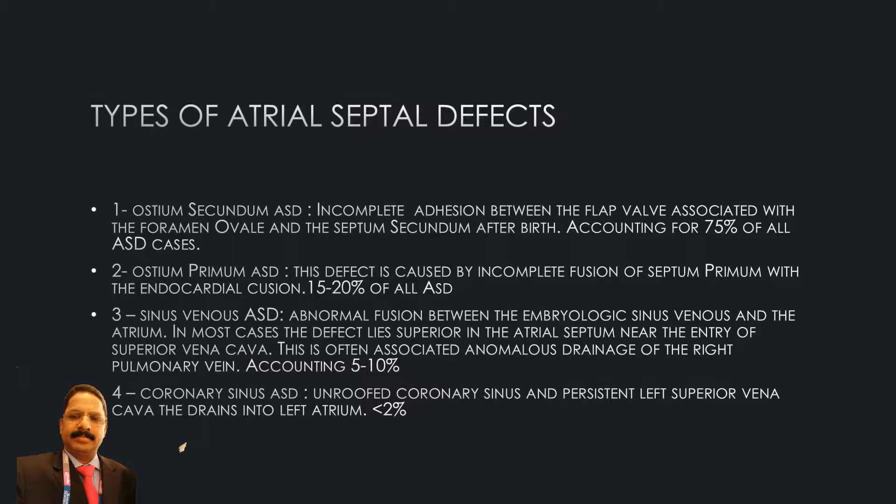Number two: ostium primum ASD. This defect is caused by incomplete fusion of the septum primum with the endocardial cushion. This accounts for 15 to 20 percent of all ASD defects.